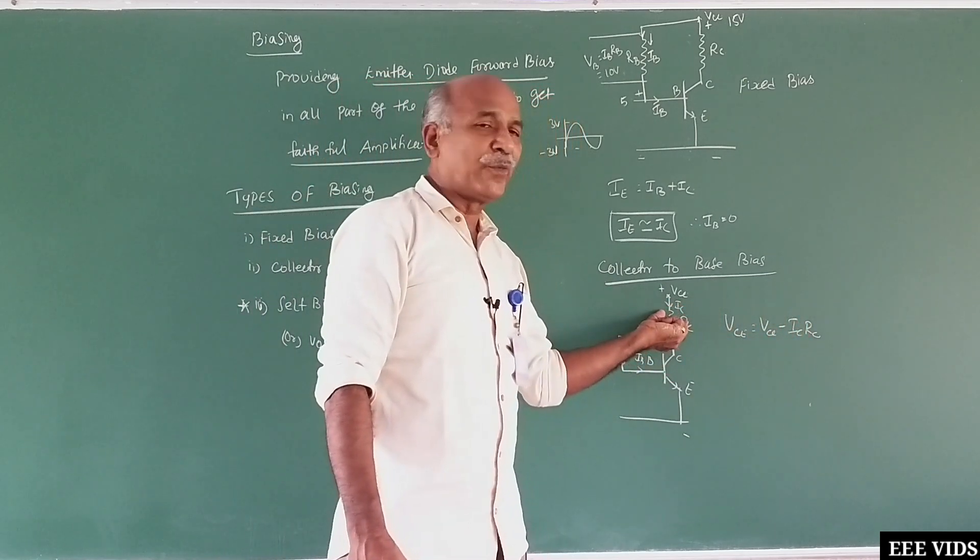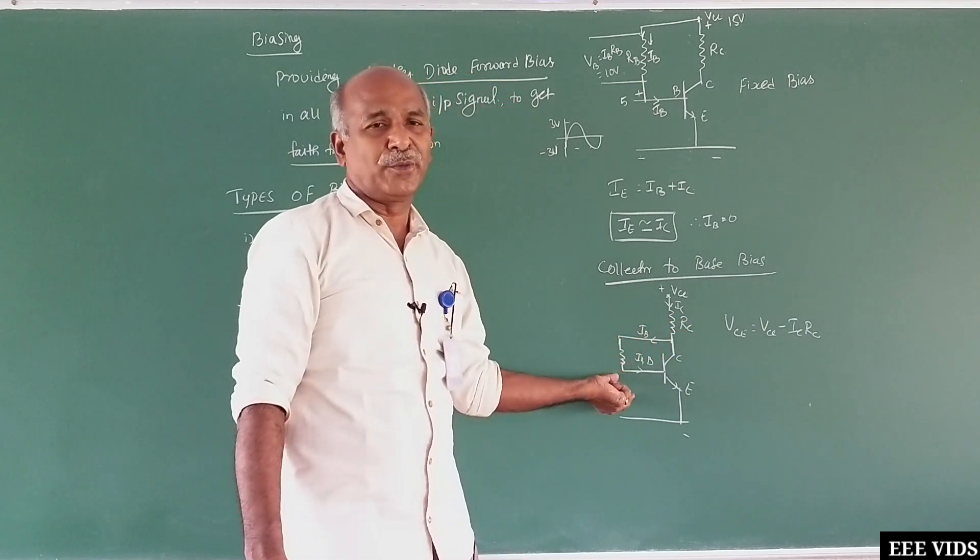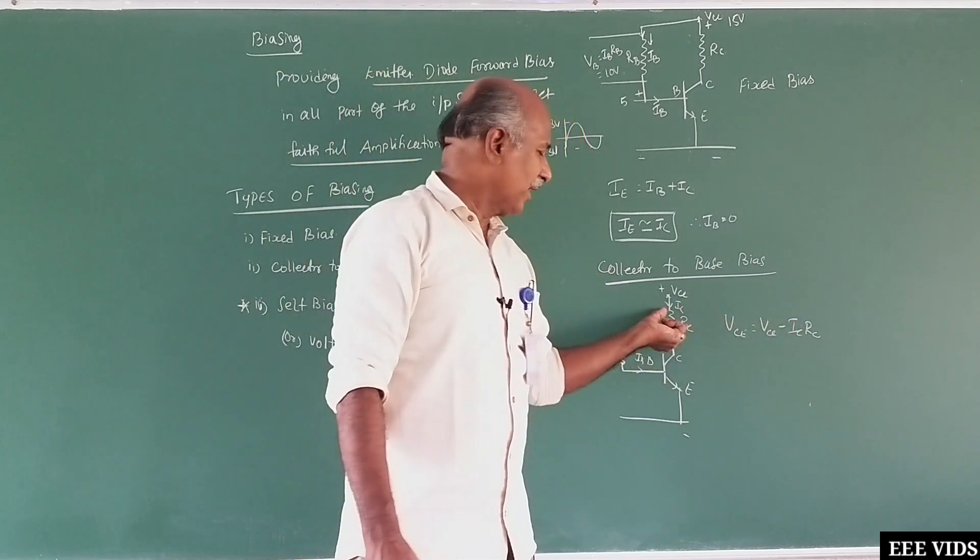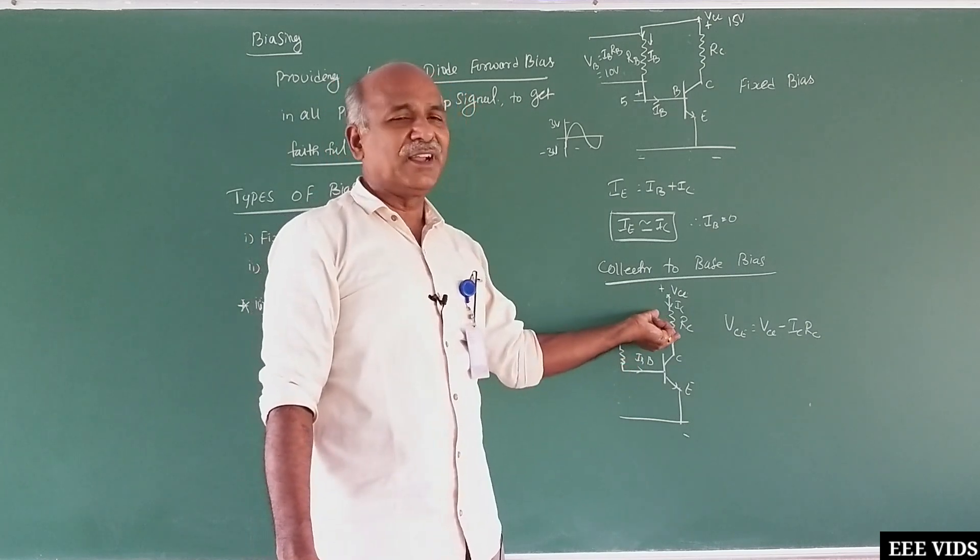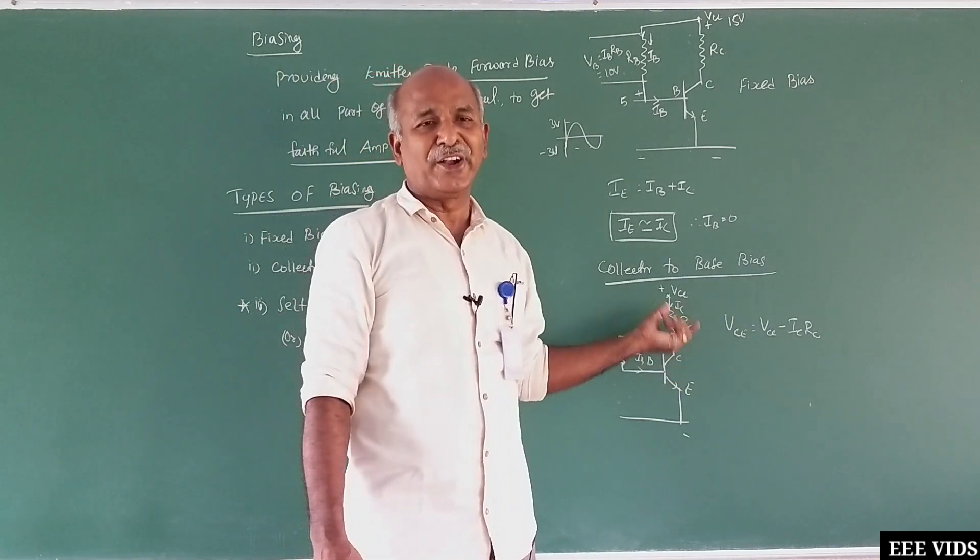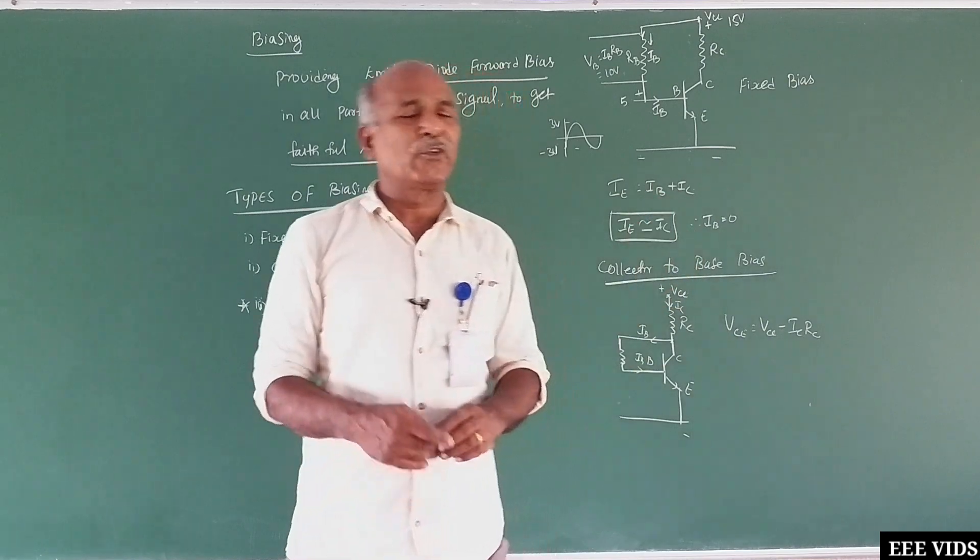The drop is lower. The base bias is lower, then it will be lower. So this is the collector to base bias.